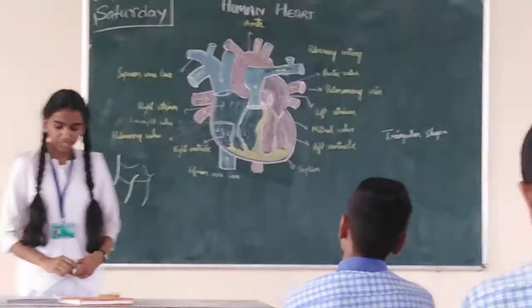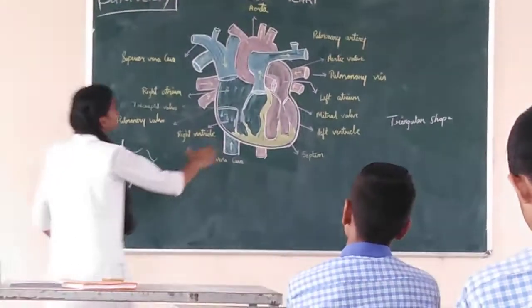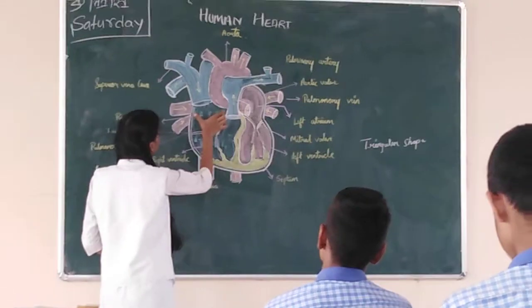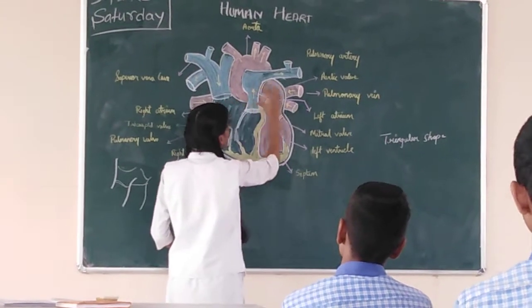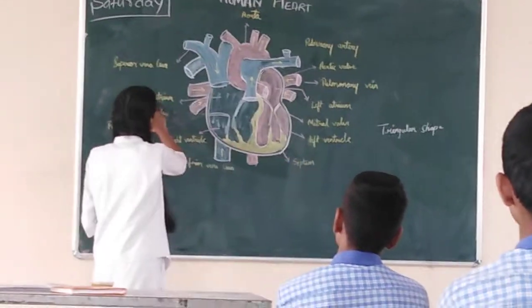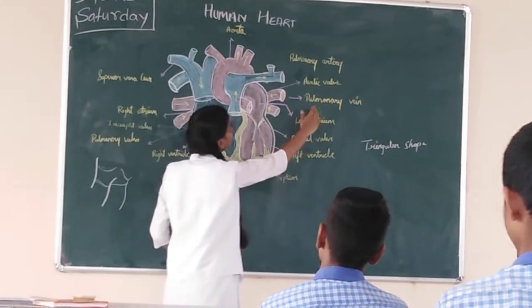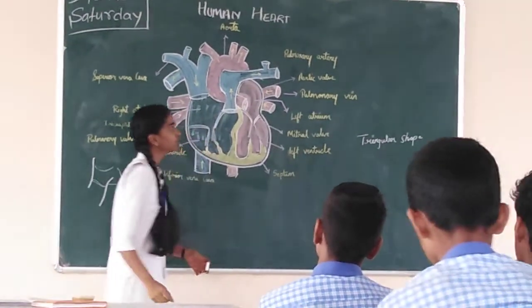The upper 2 chambers are the atria. This one and this one are called the atrium. This is the right atrium and this is called the left atrium.